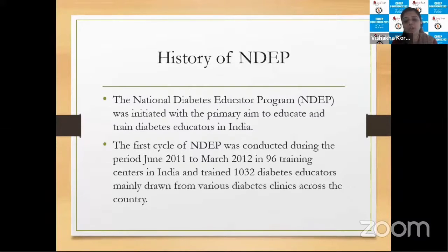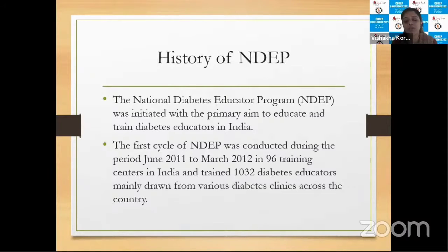Then slowly, a team decided that if we are educating patients and they follow the same lifestyle modifications at home, it will definitely give better outcomes. So the first cycle of NDP was conducted during the period of June 2011 to March 2012 in 96 training centers in India, training 1032 diabetes educators drawn from various diabetes clinics across the country.